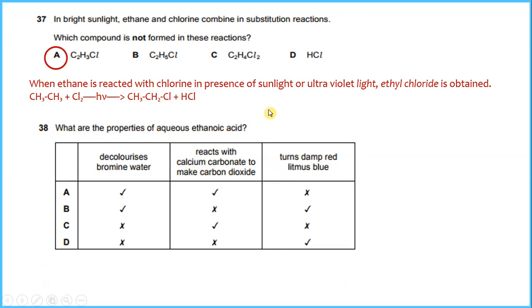What are the properties of aqueous ethanoic acid? The answer will be C. Decolorize bromine water - not happening. React with calcium carbonate to make carbon dioxide - yes. And turn damp red litmus blue - no.